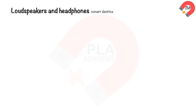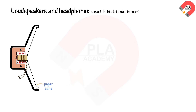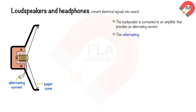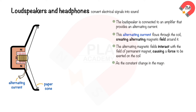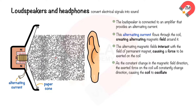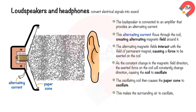Loudspeakers and headphones convert electrical signals into sound. A loudspeaker consists of a coil of wire wrapped around one pole of a permanent magnet, connected to an amplifier providing alternating current. This alternating current creates an alternating magnetic field around the coil, which interacts with the permanent magnet's field, causing a force on the coil that constantly changes direction, making the coil oscillate. The oscillating coil causes a paper cone to oscillate, making the surrounding air oscillate, creating compressions and rarefactions that form sound waves.